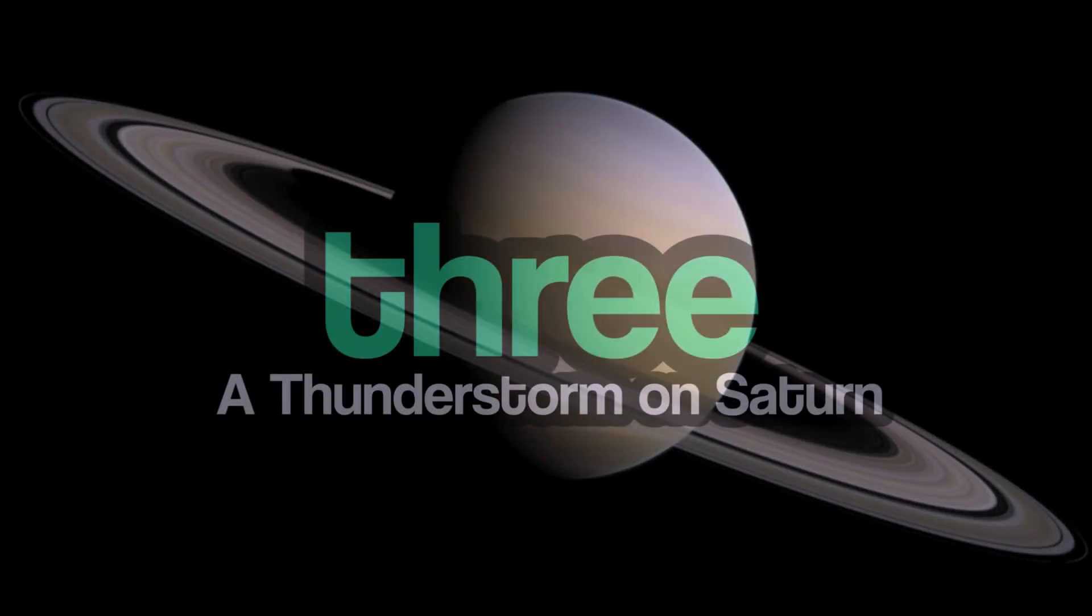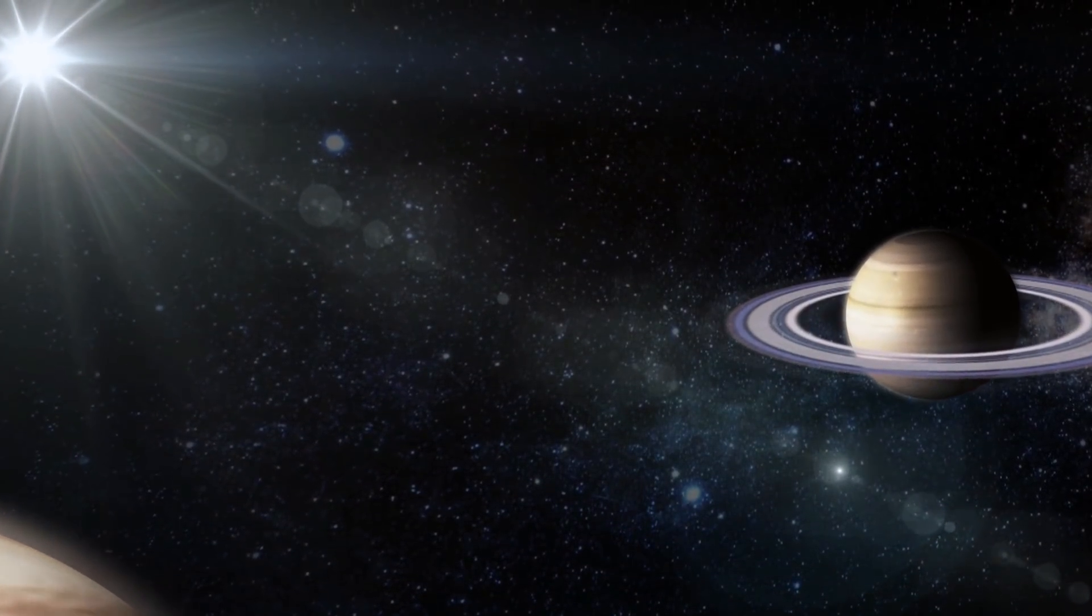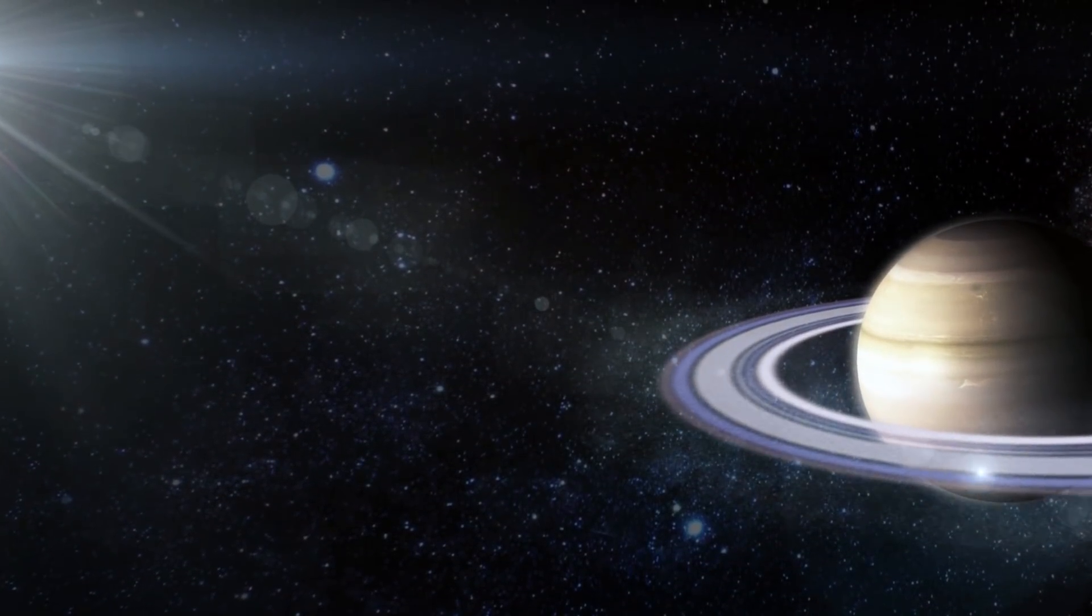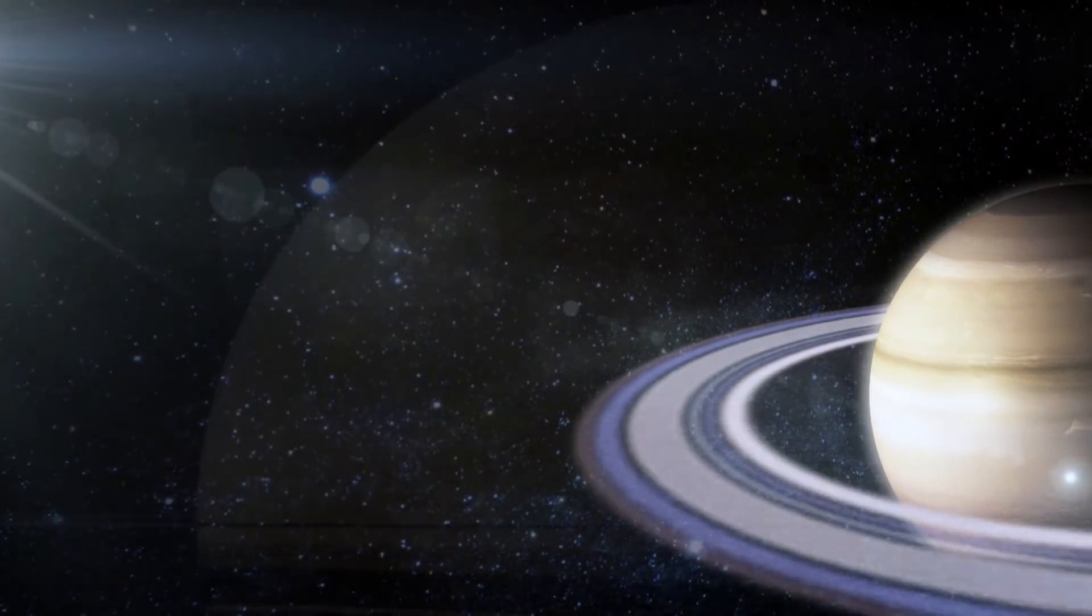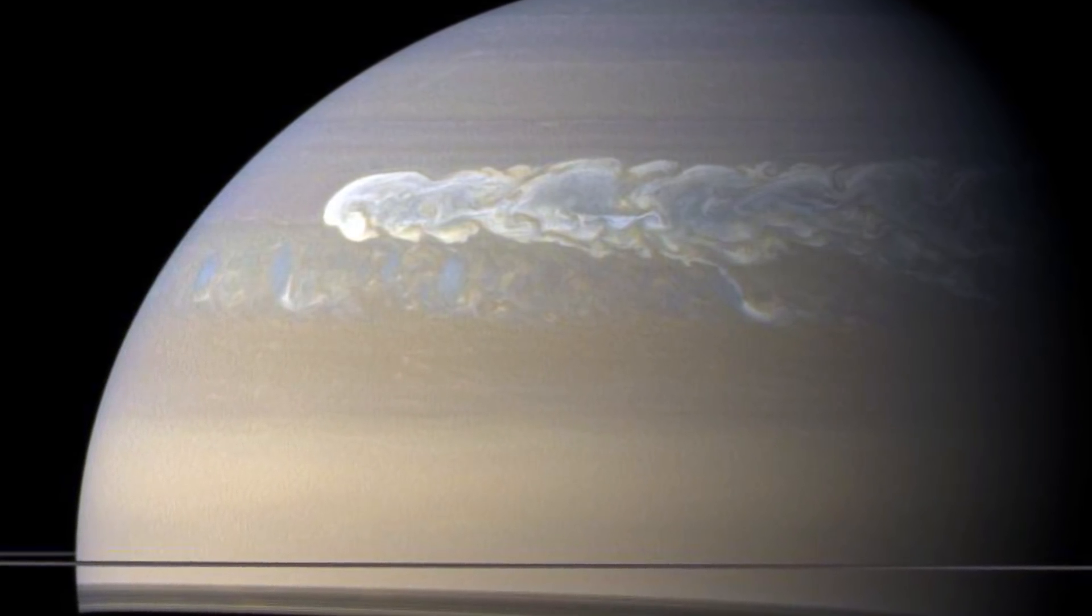Number 3. The Thunderstorm on Saturn. Besides its rings and the famous moon Titan, one of the key things Saturn is known for is its massive and incredible storms. These storms can be tens of thousands of kilometers long and can last decades.